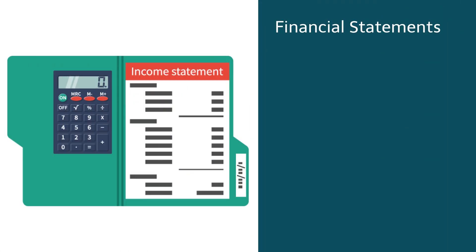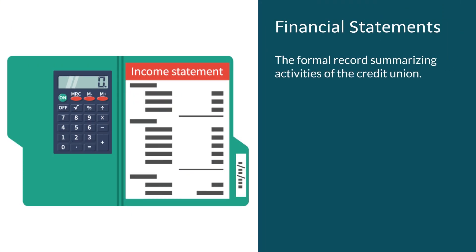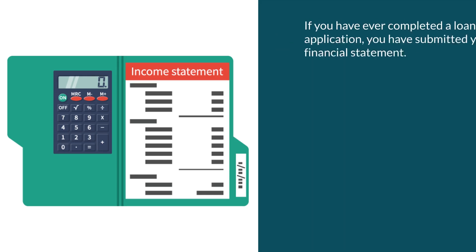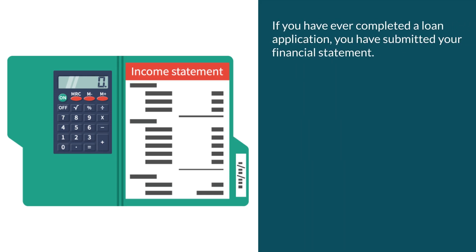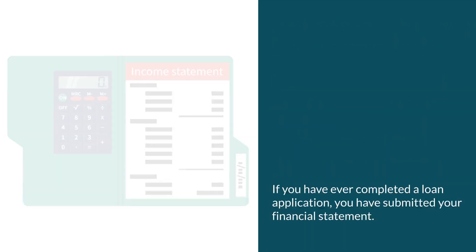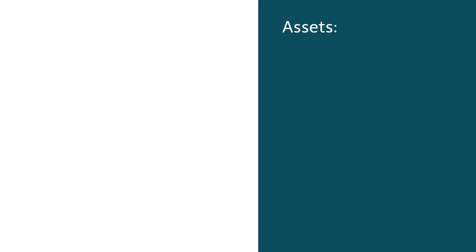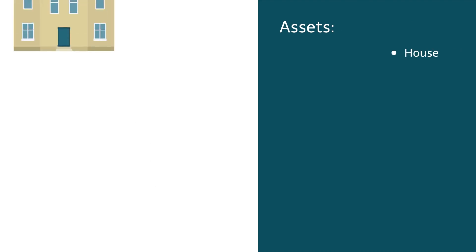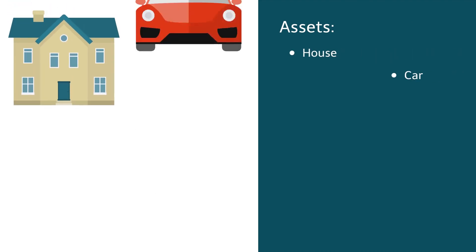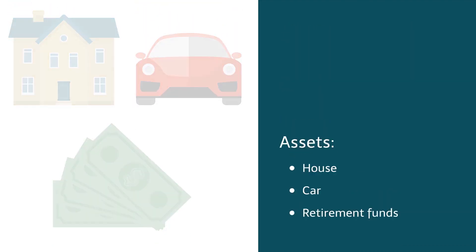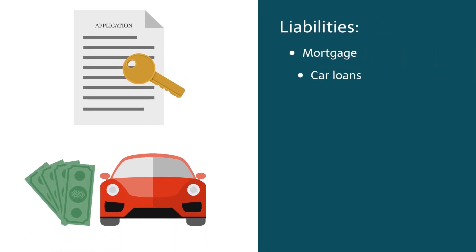Financial statements are the formal record summarizing activities of the credit union. Think of it as a financial report card. We can all probably relate to financial statements on a personal level. If you have ever completed a loan application, you have submitted your financial statement. The assets you listed on the loan application would include your house, car, and retirement funds.